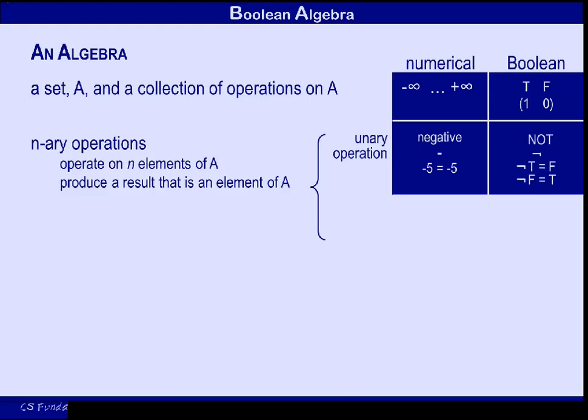In the Boolean case, the unary operator is called NOT, which is consistent with the idea that the algebra deals with statements that can be true or false. Because if something is not true, then it's false. And if it's not false, then it's true.